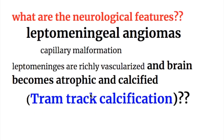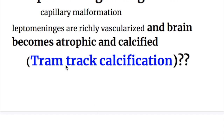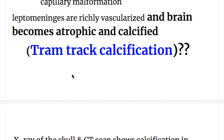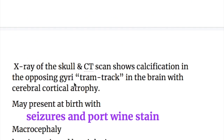The neurological features include leptomeningeal angiomas and capillary malformation. The leptomeninges are richly vascularized, and the brain becomes atrophic and calcified, showing tram-track calcification. X-ray skull and CT scan show calcification in the opposing gyri — the tram-track appearance — along with cerebral cortical atrophy.